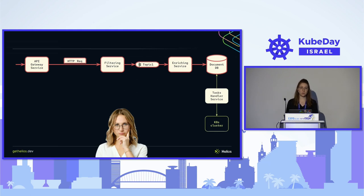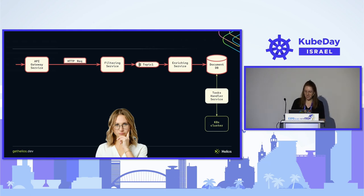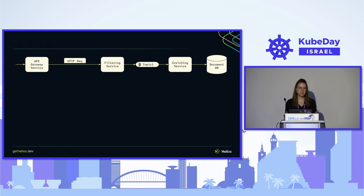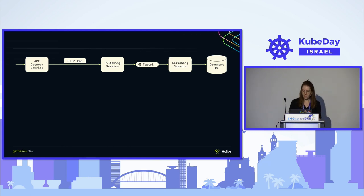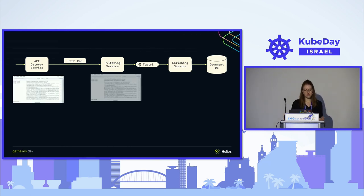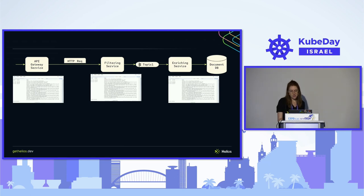On the last day of the sprint, Maya starts working on a bug where one of the flows is broken and data is not being saved to the database. She moves the ticket to in-progress and starts investigating. She knows her system well and understands that in a distributed system the first thing you want to do is find where the flow is broken — so she starts looking at logs, which is not very helpful.